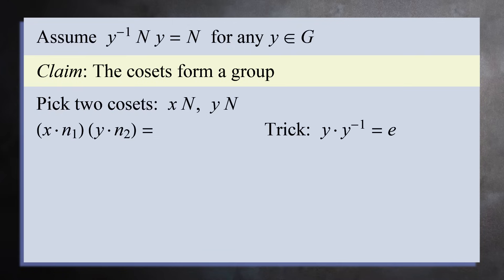Here's the clever trick. y times y inverse equals the identity element e. Multiplying by e has no effect, so let's insert y times y inverse right after x. In the middle of this expression is y inverse times n1 times y. But from our assumption, we know this must be an element of the subgroup N, call it n3.